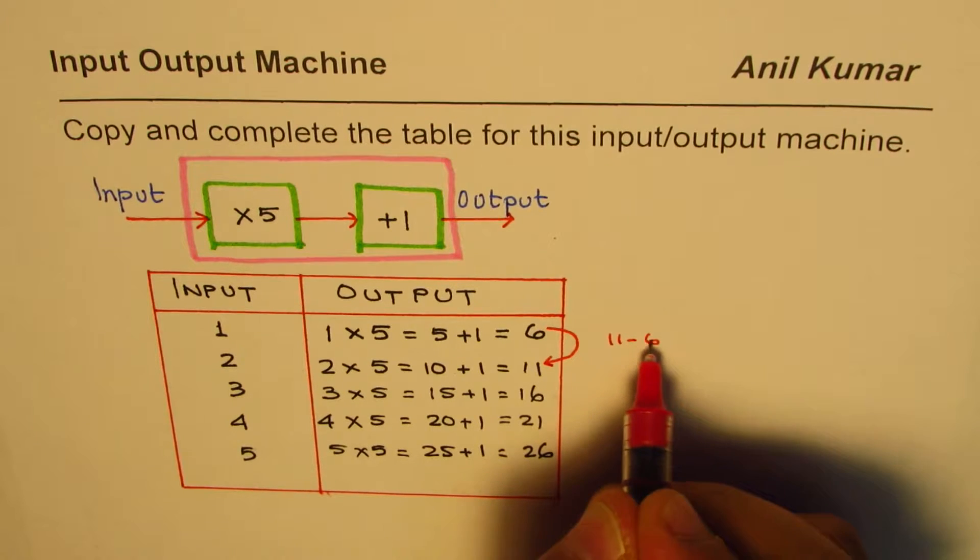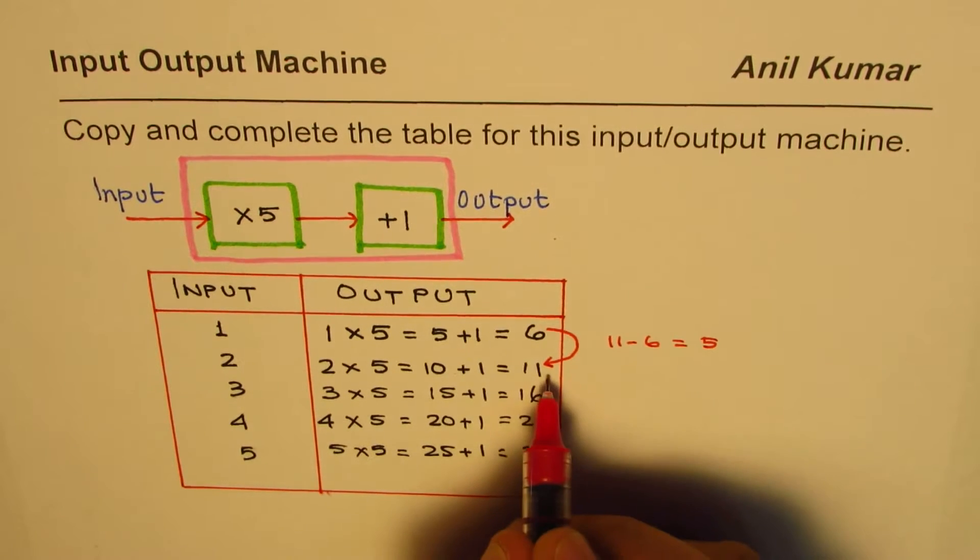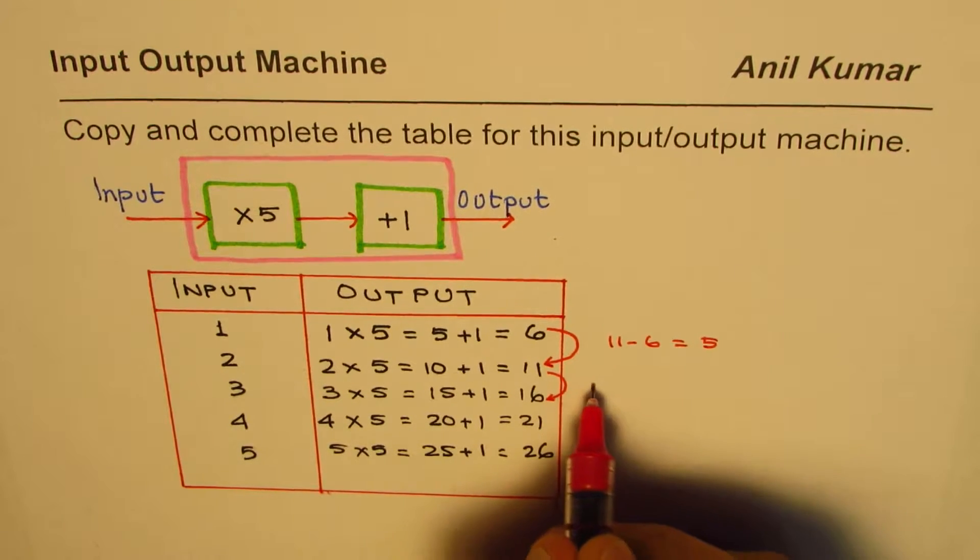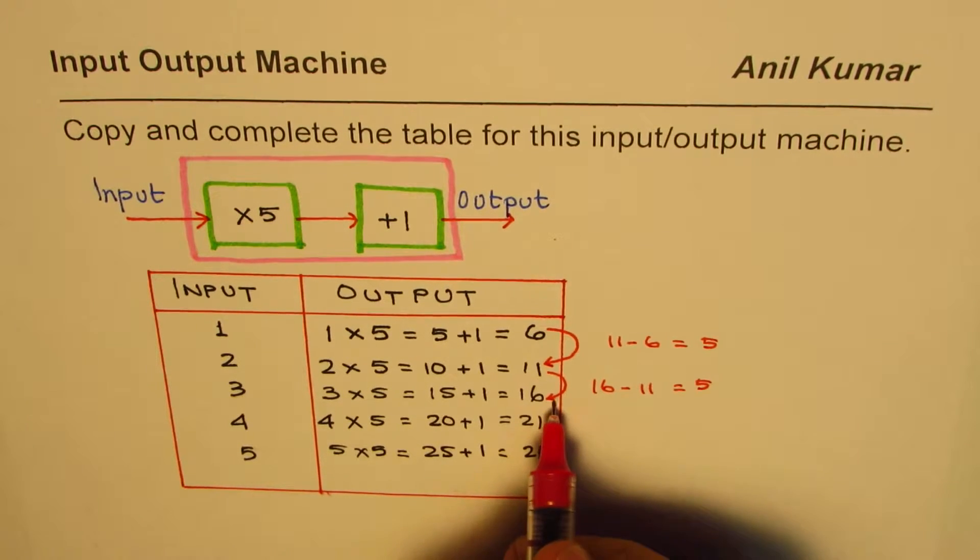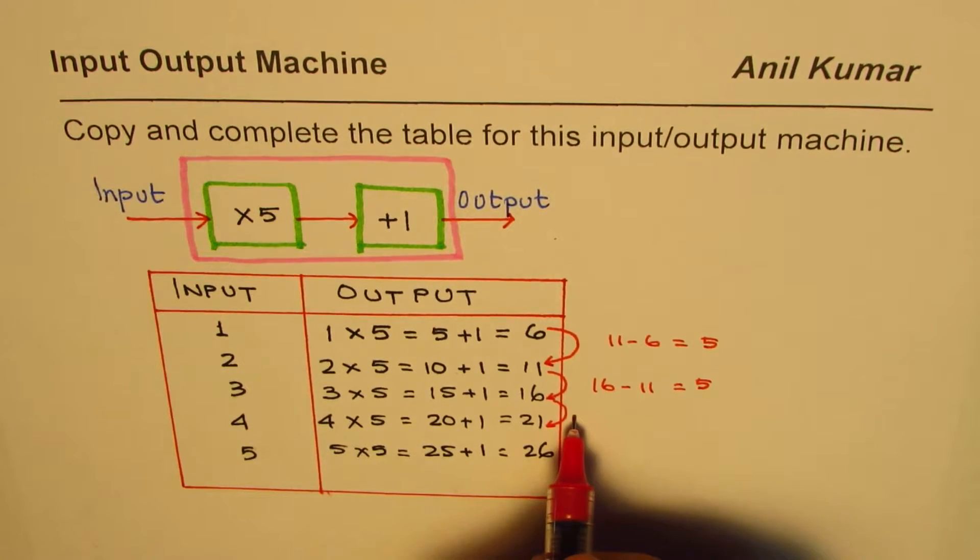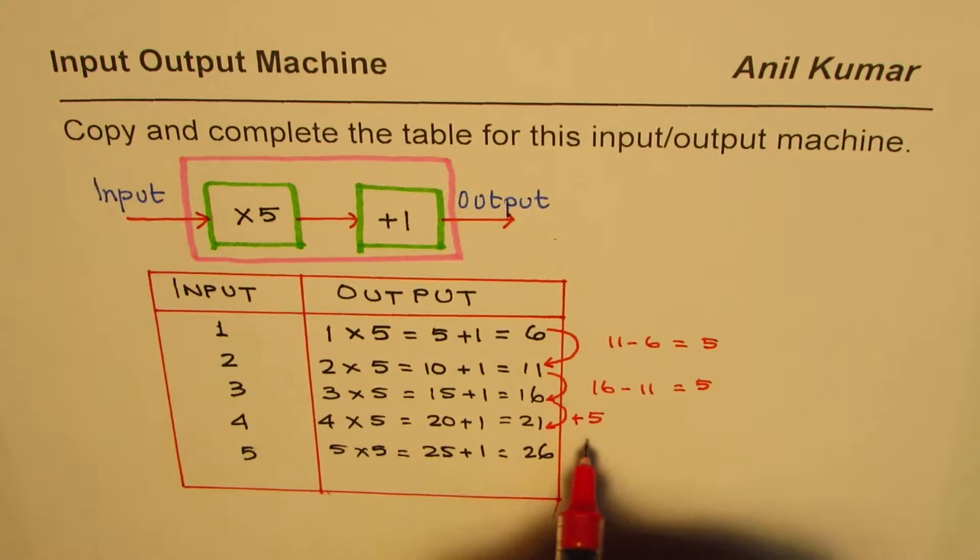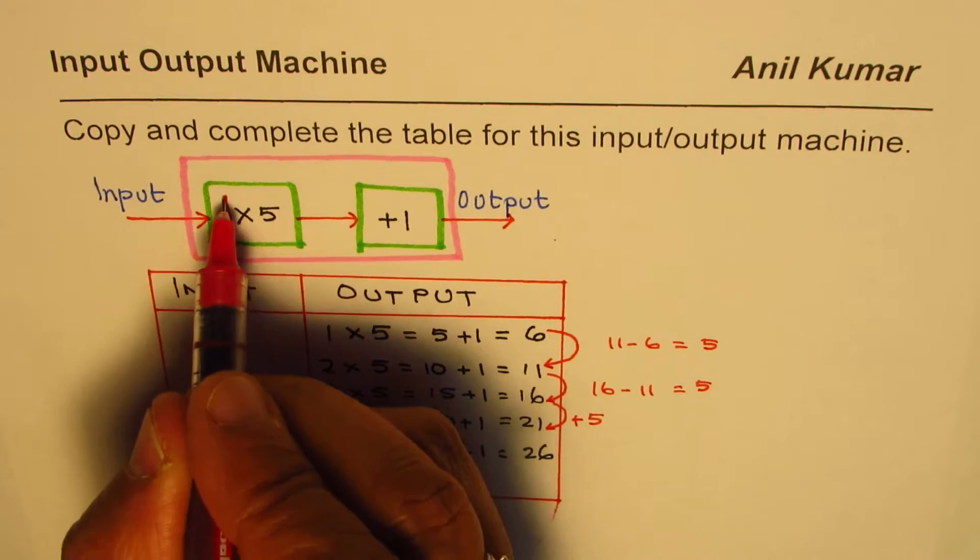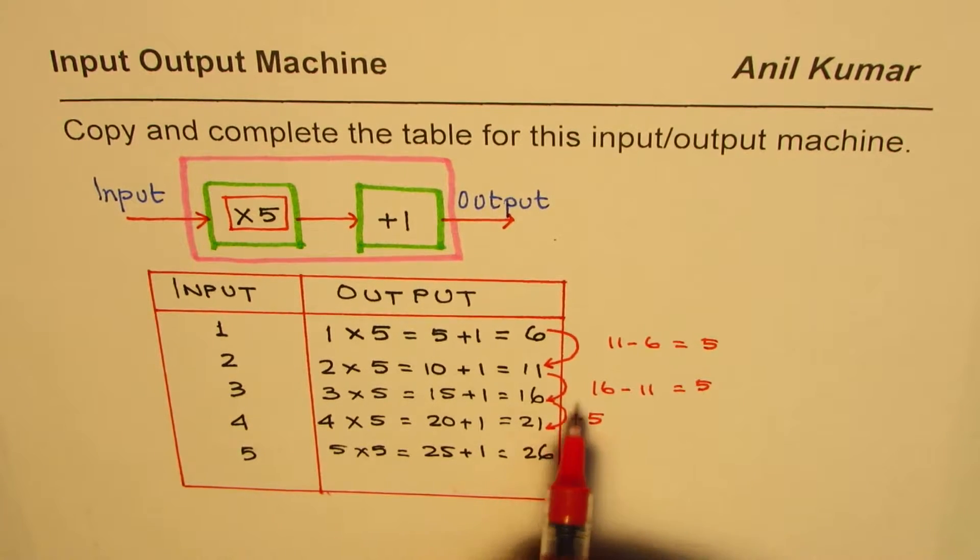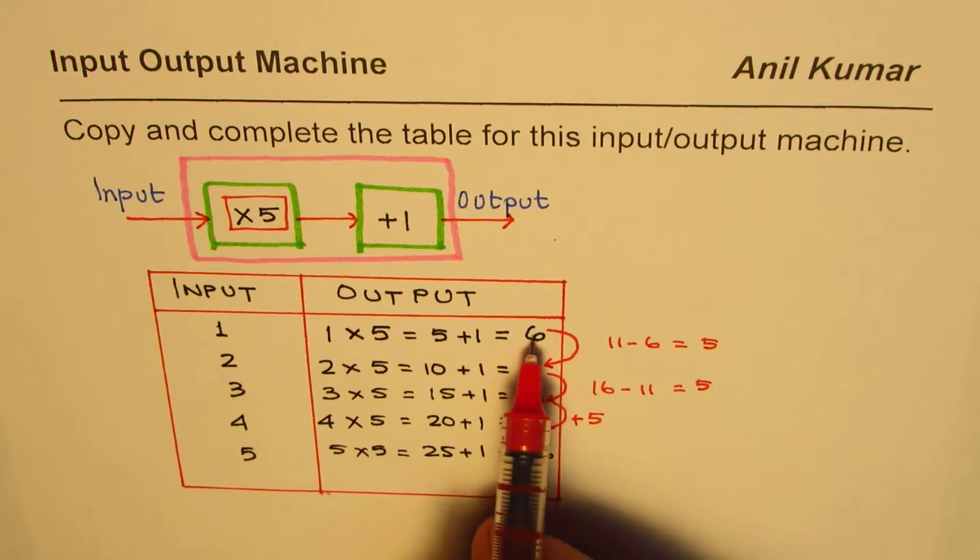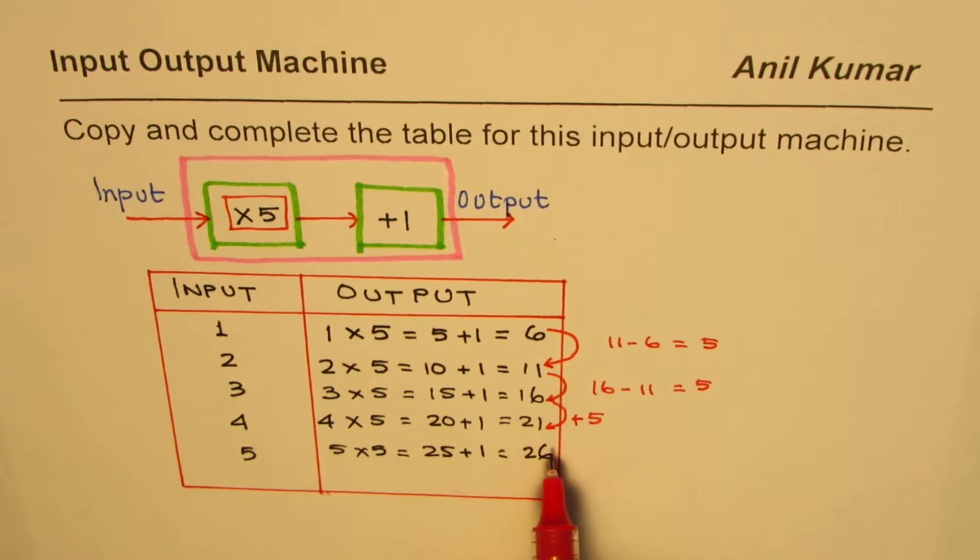Here, 11 minus 6 is 5. How about 16 minus 11? 16 minus 11 is also 5. So every time you move, the numbers are increasing by 5, and that is what this first number is all about. Times 5 is the number by which the output increases each time.